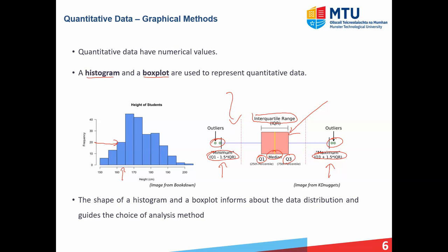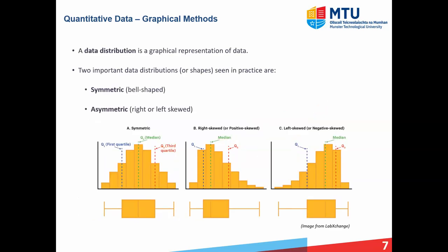One last thing about histograms and box plots is they're very important in terms of informing you about the data distribution. Think of the data distribution as just the shape of your data set. I'm going to spend a bit of time looking at the different types of distributions because the type of distribution is going to inform the type of analysis that you ultimately end up using. You can think of the data distribution as the graphical representation of your data.